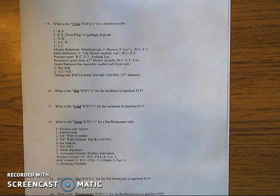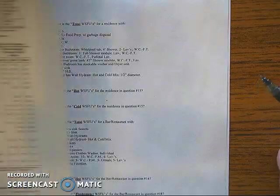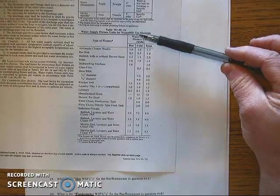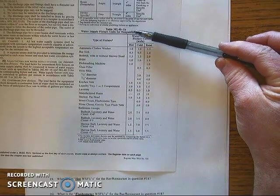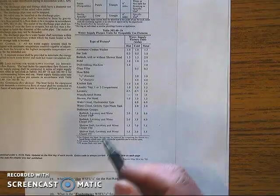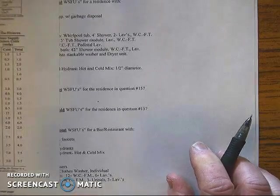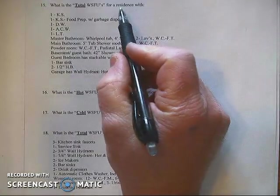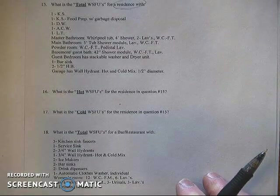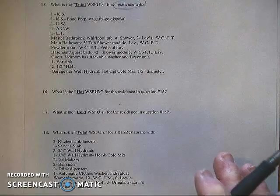We're going to have to assign a WSFU load. To do that we're simply going to go to our code book and we're going to look up 382.40 table 1b. We're going to use the table that deals with non-public fixtures. Of course this residence falls in the category of a non-public building and the fixtures inside of it are going to be non-public use.